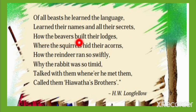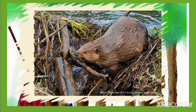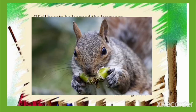How the beavers built their lodges, where the squirrels hide their acorns? Ab jo beaver hoti hai, woh kaise apna ghar banati hai — beaver made their home with mud and the branches of the tree. Jo squirrels hoti hain, woh apne acorns kahan chhupati hain? Yeh sab baatein Hayvatha jaanta tha. Acorns kya hota hai? Acorns is a type of fruit jo ki oak tree par lagta hai.